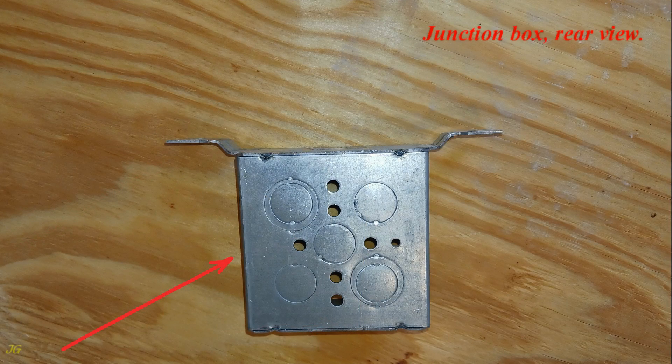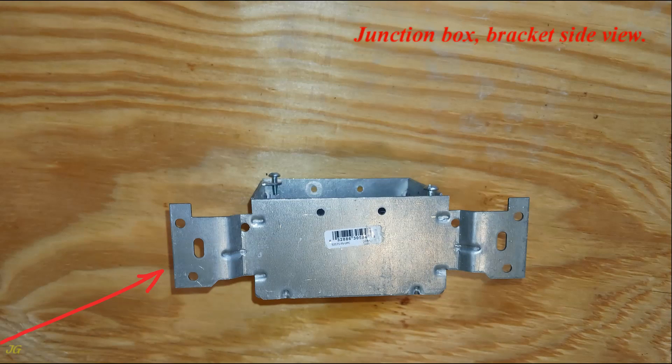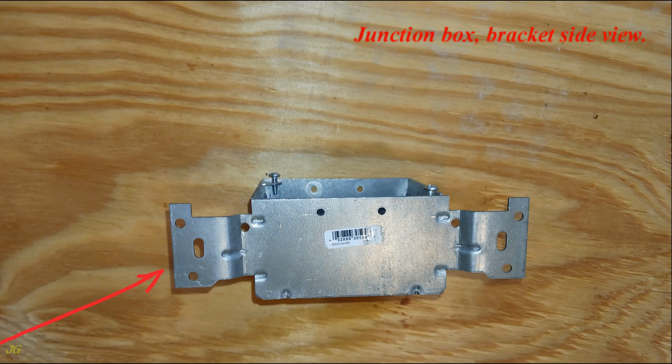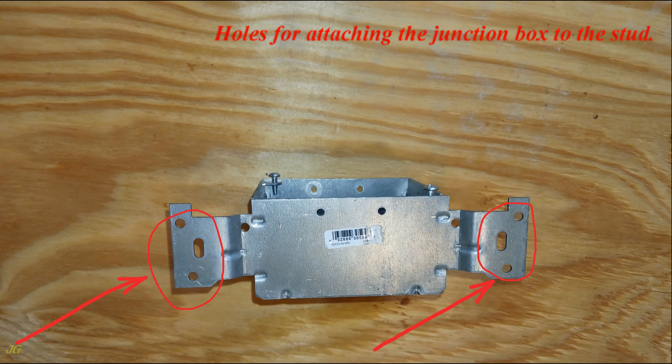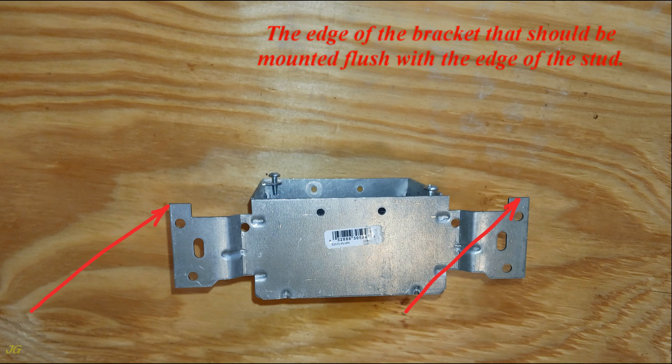Junction box rear view. Junction box bracket side view. Holes for attaching the junction box to the stud. The edge of the bracket that should be mounted flush with the edge of the stud.